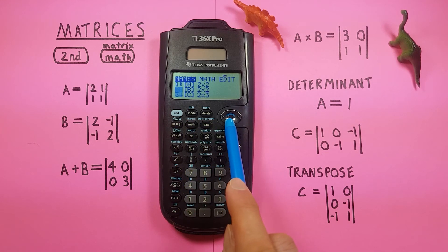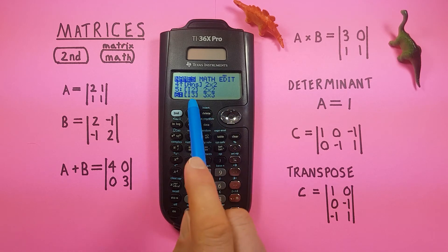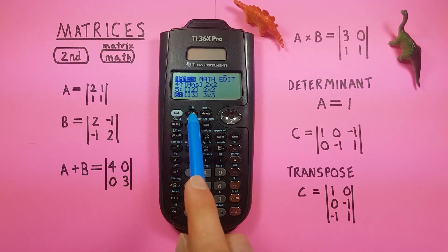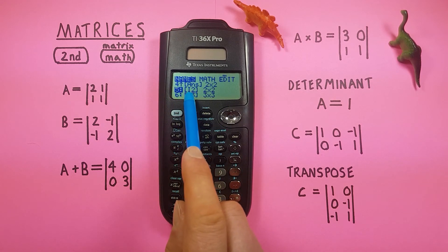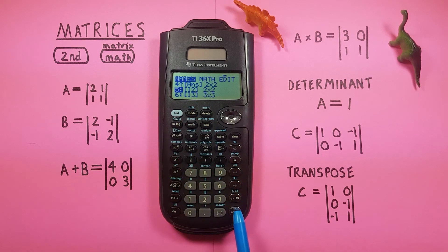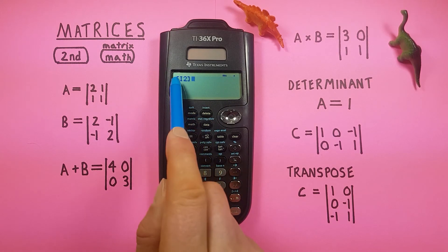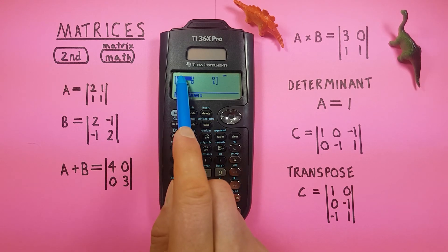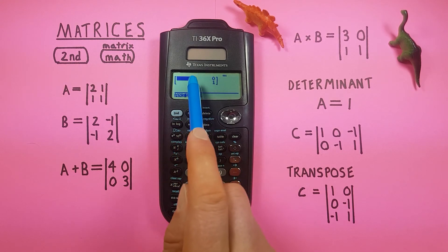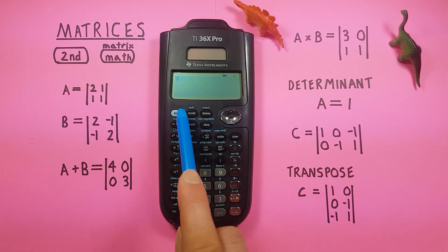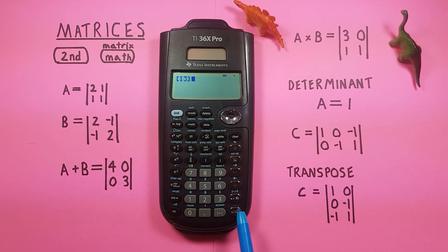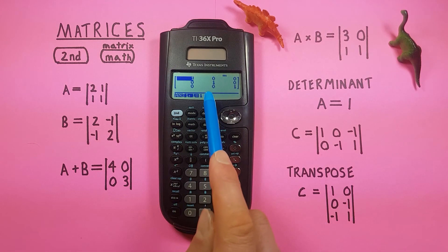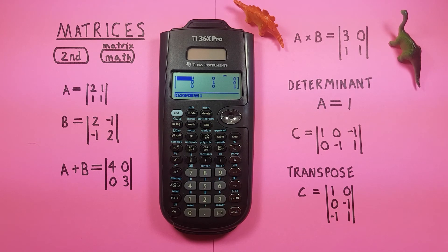Going back to the matrix menu, if we scroll down in the names section we also see I2 and I3. These are the identity matrices — number five is I2, the identity matrix for a two by two. Place it on screen and we see the identity matrix: one, zero, zero, one. The same applies for I3 in the sixth slot — place it on screen and there's our three by three identity matrix. These are very useful for calculations.